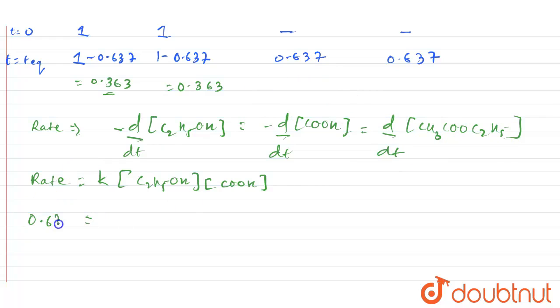Because d/dt of CH3COOC2H5 can be written, so 0.637 equals K times the concentration of C2H5OH is 0.363, and for COOH is 0.363. So you can write this as 0.363 the whole square.